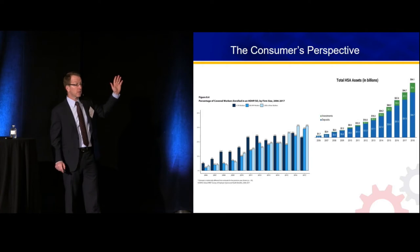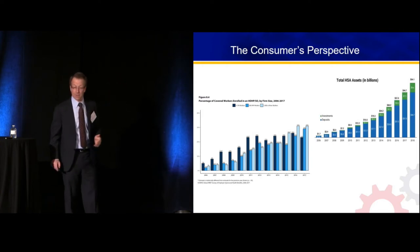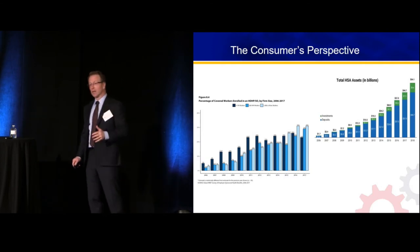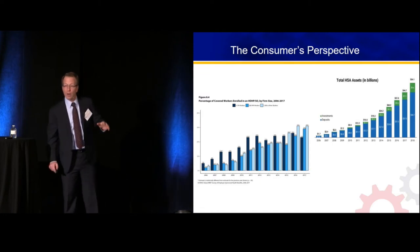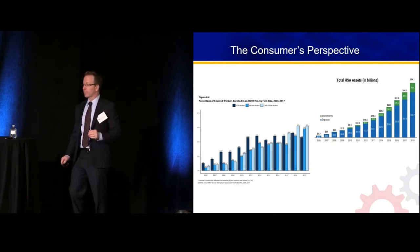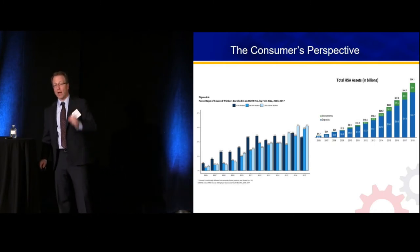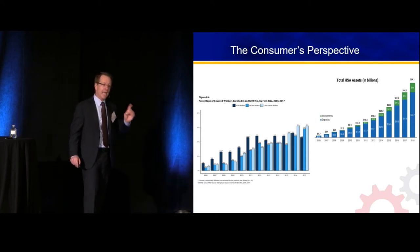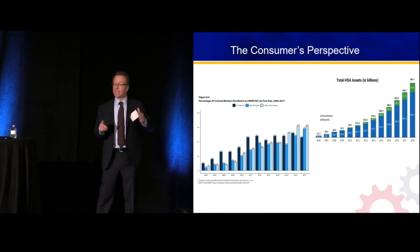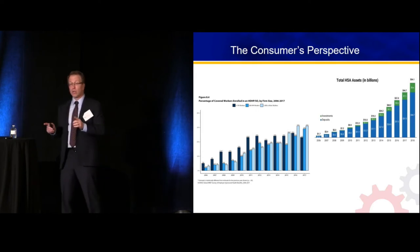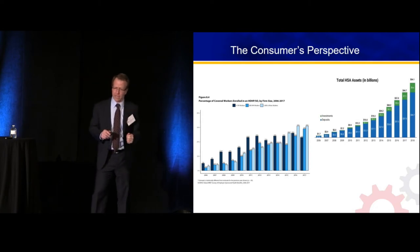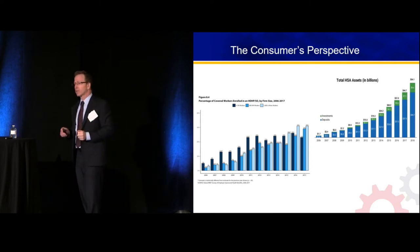Anybody have a $4,000 or $5,000 deductible? A lot of hands go up. On the left side of the slide, we're showing the growth in high deductible health plans among employers. Going back 10 years, we're at 2–3%. We're now at 35–38% of employers where the dominant product being offered is a high deductible health plan.